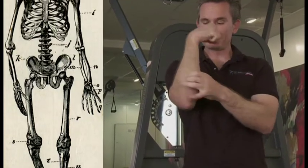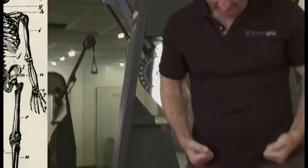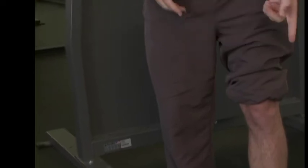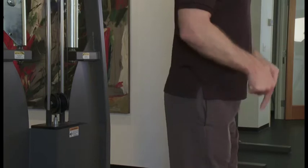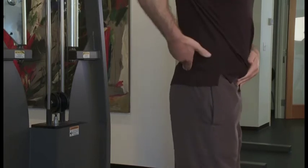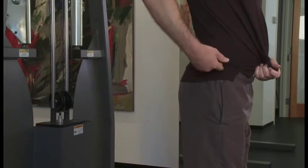So when the leg rotates in, the head of the femur actually goes back. So what happens is, legs rotate in as the foot collapses, and your pelvis rotates forward. So the front of your pelvis goes down, and the back of your pelvis goes up. And you can see that what happens is my lower back arches.